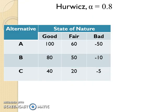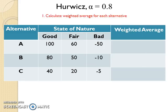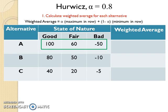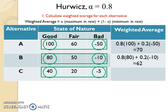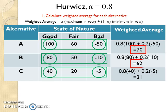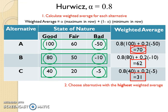To make a decision by using the Hurwicz method with alpha value equal to 0.8, first add a column to the payoff table for weighted average and then calculate the weighted average for each alternative using the given formula. After the weighted averages for all alternatives have been calculated, identify the highest weighted average. Here the highest weighted average is 70, therefore the decision is to choose alternative A.